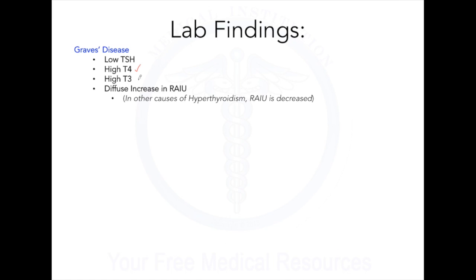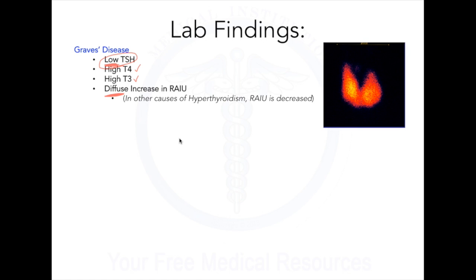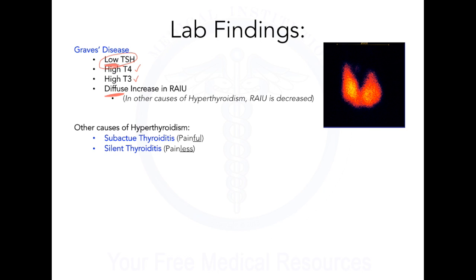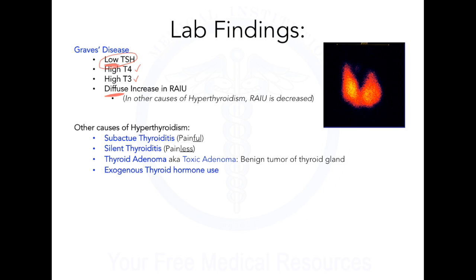In lab findings, we'll see increased thyroid hormones and decreased TSH levels. What's really important is a diffuse increase in radioactive iodine uptake, which allows us to differentiate Graves' disease from other forms of hyperthyroidism — including subacute thyroiditis, which tends to be painful; silent thyroiditis, which is painless; toxic adenoma; exogenous thyroid hormones; and pituitary adenoma.